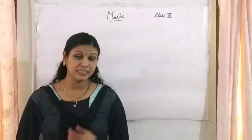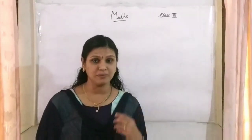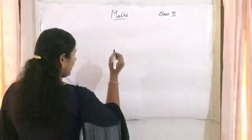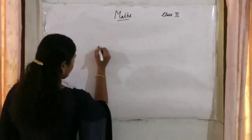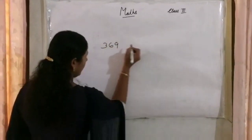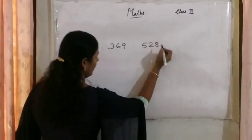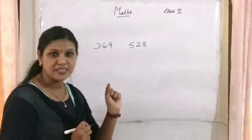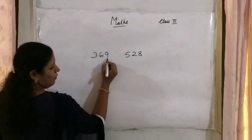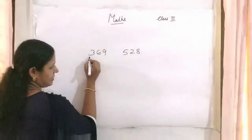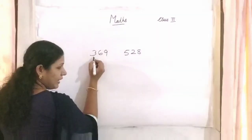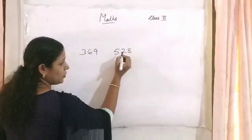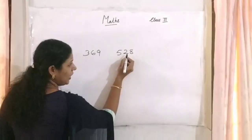We are going to start with comparing two numbers. How to compare two numbers? Here, I write an example: 3, 6, 9 and 5, 2, 8. How to read these numbers? First, we count the place value — 1, 10, 100 — so we read this number as 369. Here, 1, 10, 100, so this number is 528.